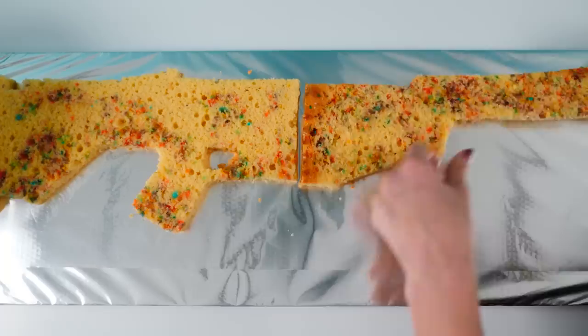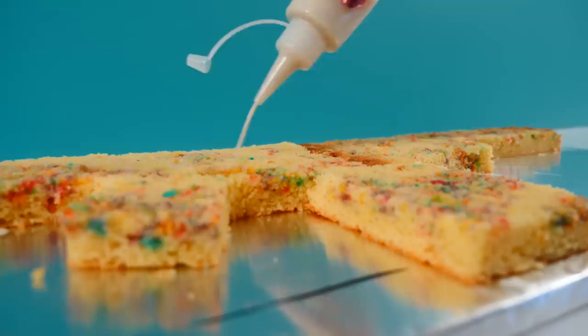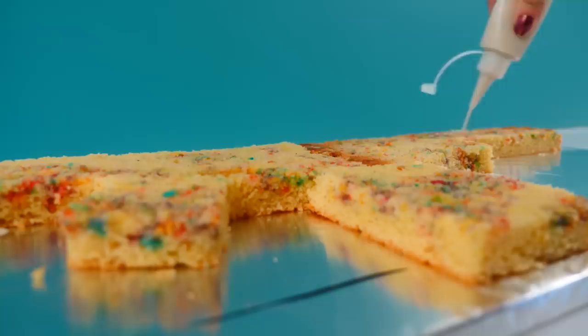Put the magazine part three fingers away from the handle and this piece is the only piece that's staying one layer of cake, the others are all going to be two. Squirt on a little bit of milk to keep that cake super moist and then spread on a thin layer of buttercream.